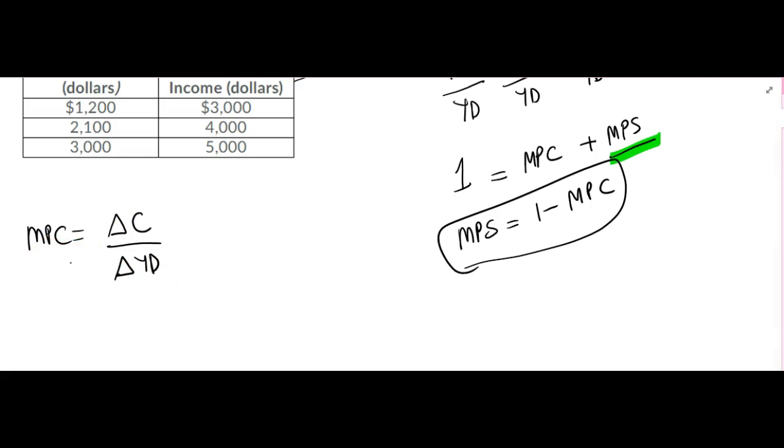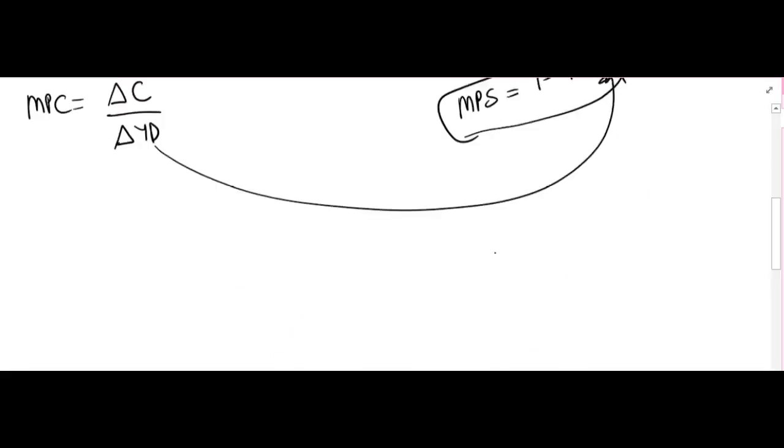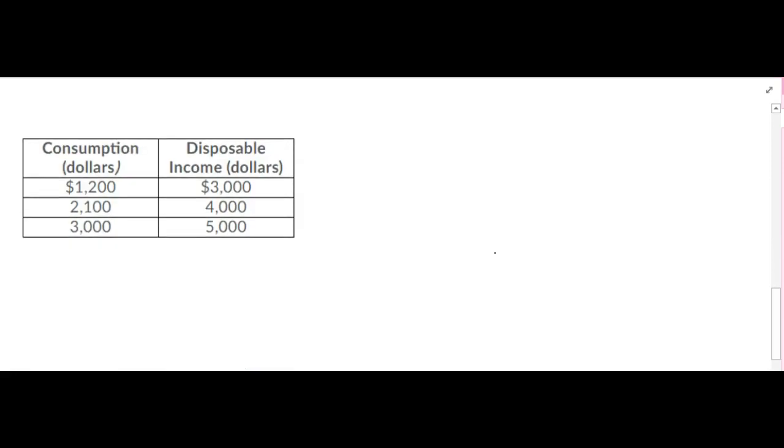Now, as long as I find this, I can plug it in here and solve for marginal propensity to save. How are we going to find that marginal propensity to consume from this table?